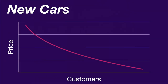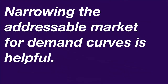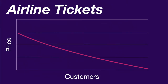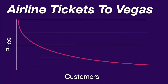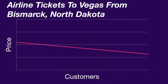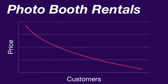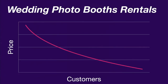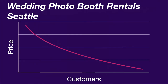If you narrow the addressable market for a demand curve, it tends to offer more insights. For example: airline tickets is very general; airline tickets to Las Vegas is better; airline tickets to Vegas from Bismarck, North Dakota is pretty specific. You might even add weekday or weekend. In our photo booth rental example, you might go from 'photo booth rentals' to 'wedding photo booth rentals, Seattle.'